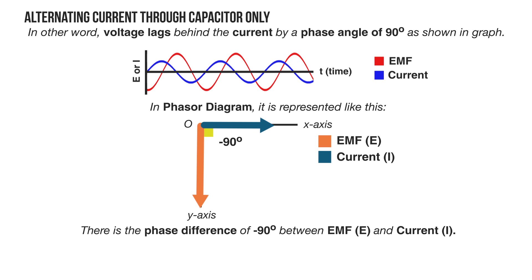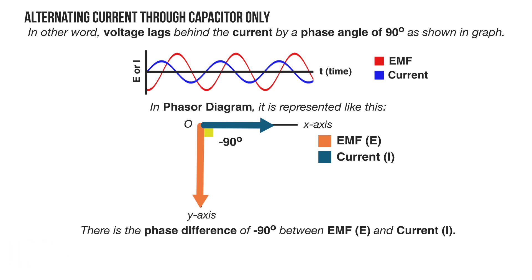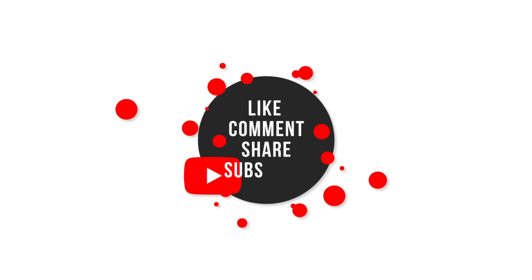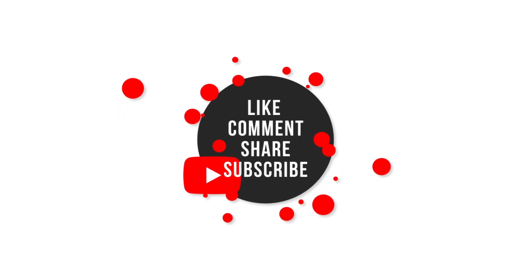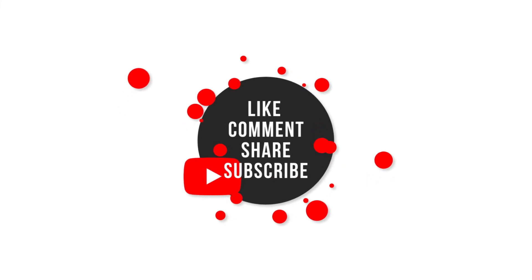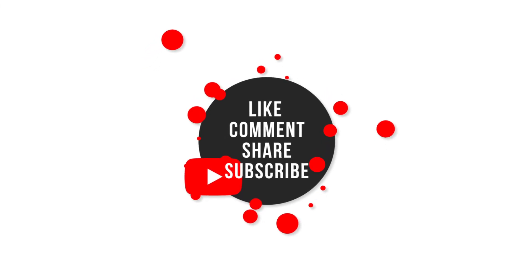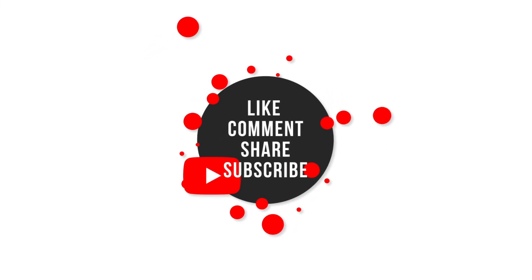Finally, we have come to the end of this video. I hope by watching this tutorial you have understood much more about AC circuits with a resistor, an inductor, and a capacitor separately. Thank you so much for watching. If you liked this video, please like, comment, share, and subscribe to my channel, and press the bell icon to get notifications when I upload a new video. I will see you in my next video — till then, bye bye.